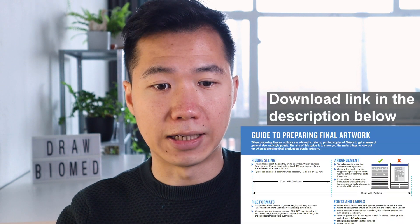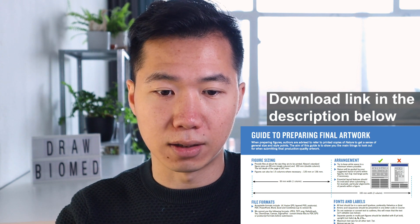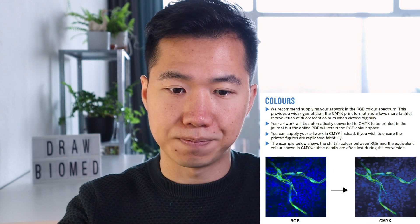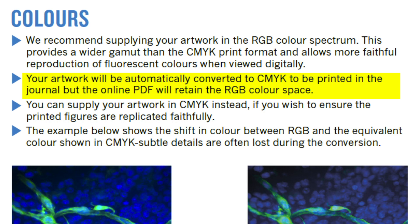Let's take a look at the Nature journal guidelines. This is the guide to preparing final artwork for Nature publications, and they have a section about colors. They specifically recommend supplying your artwork in the RGB color spectrum, and they give the reason: RGB provides a wider gamut than CMYK when displayed digitally. The second guideline states that your artwork will be automatically converted to CMYK to be printed in the journal, but the online PDF will retain the RGB color space.